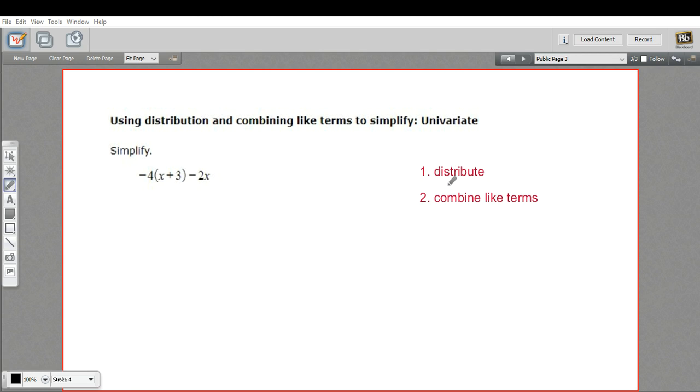One is to distribute. You see we've got a set of parentheses here and this number snugged up outside of it. That means this negative 4 is multiplied by this x plus 3, so you have to distribute that through. And then we've got other terms here, so we'll see if we can combine like terms after we do that distribution.